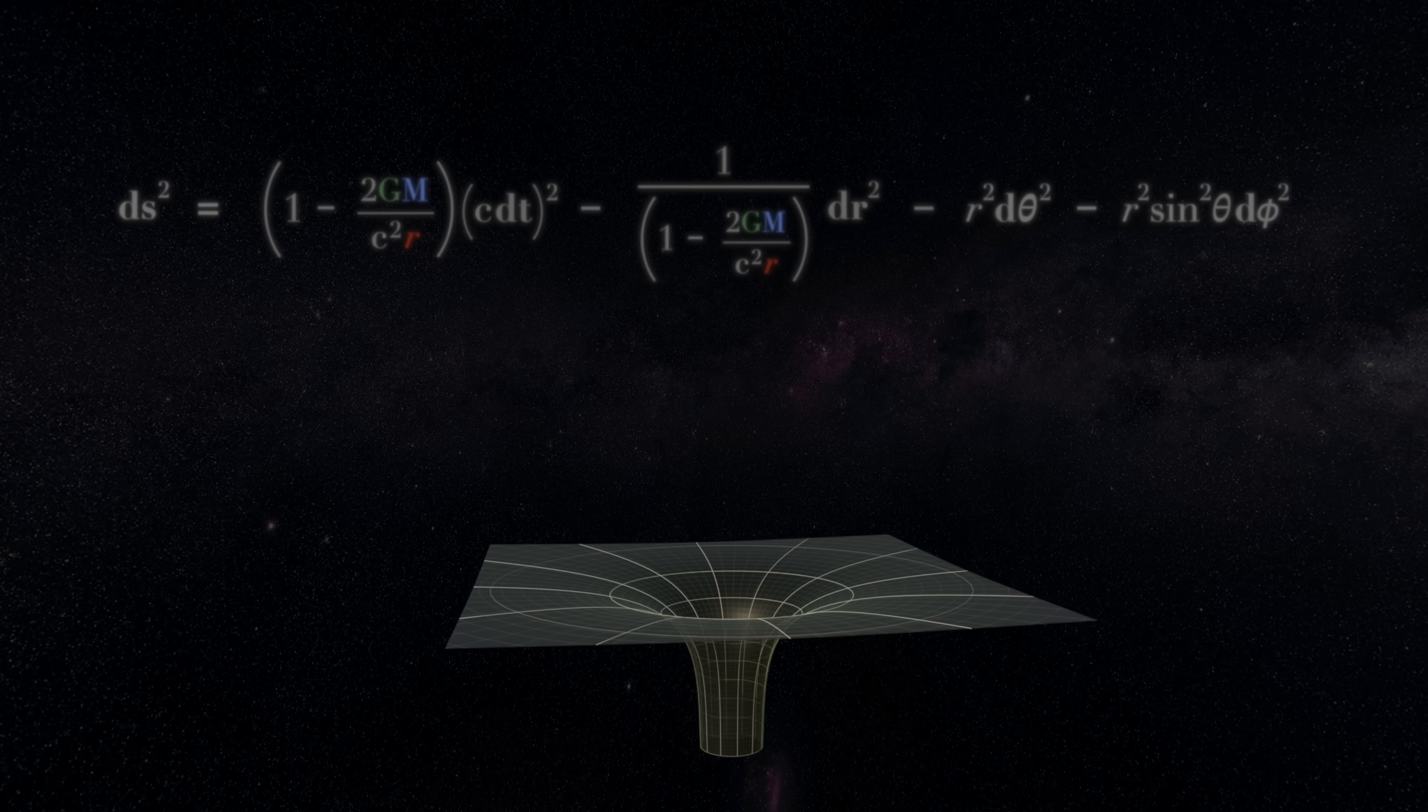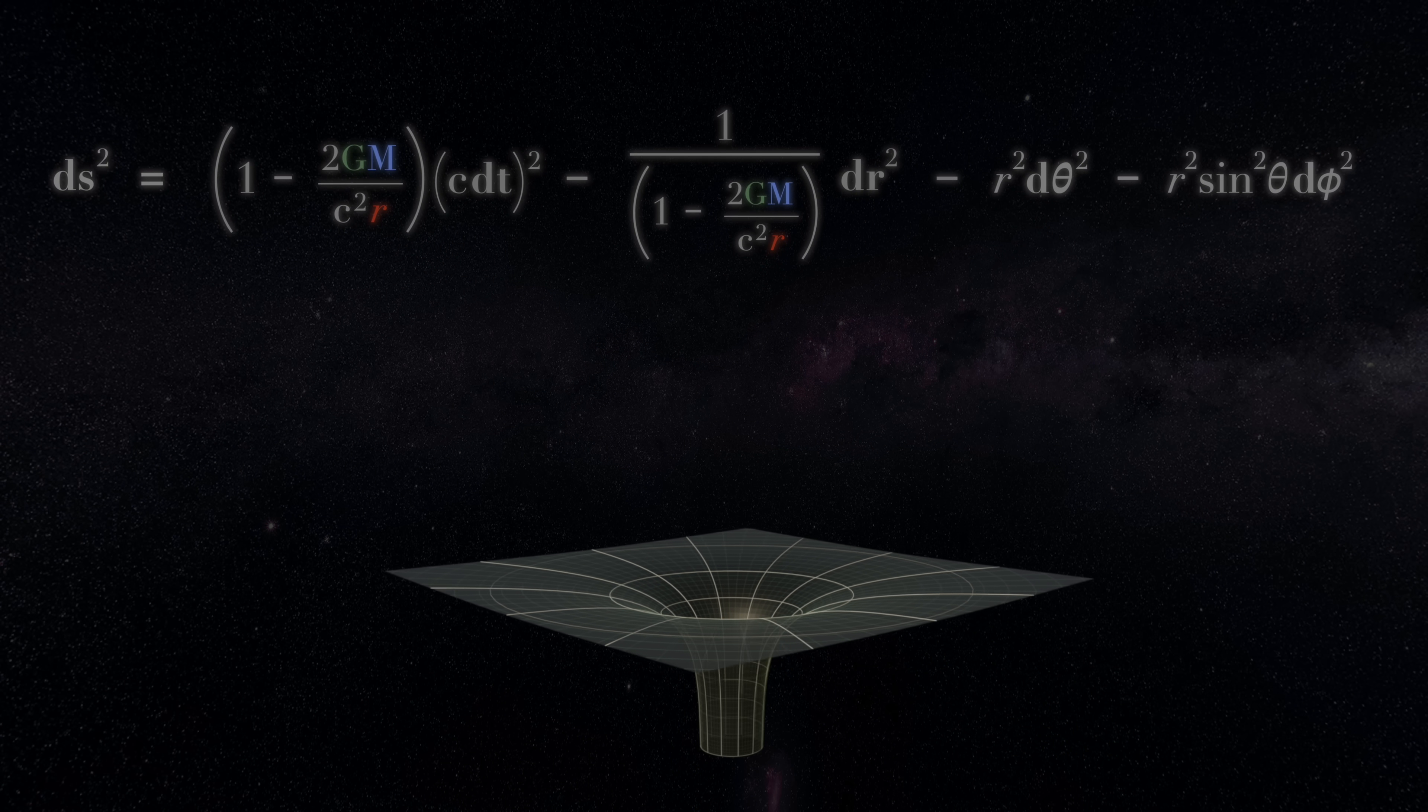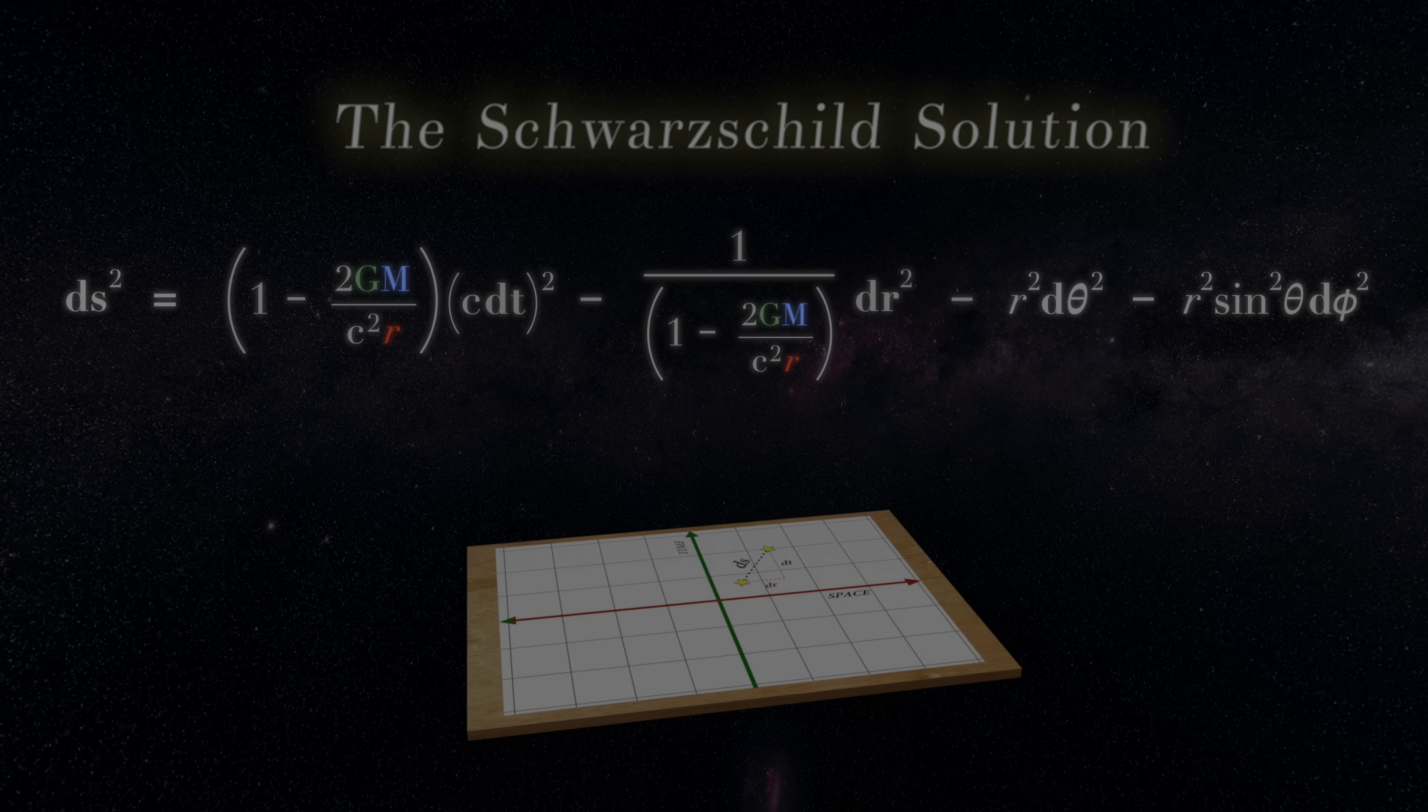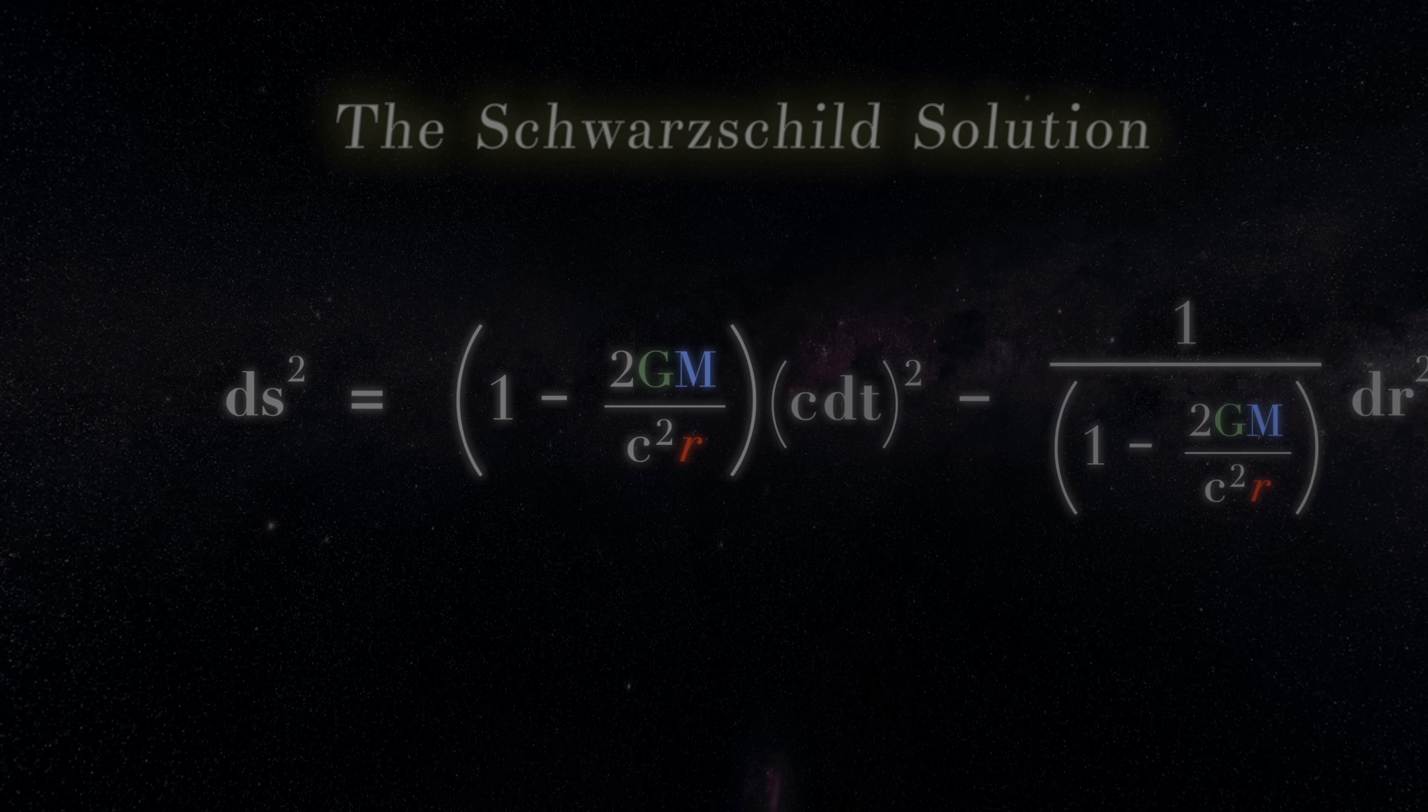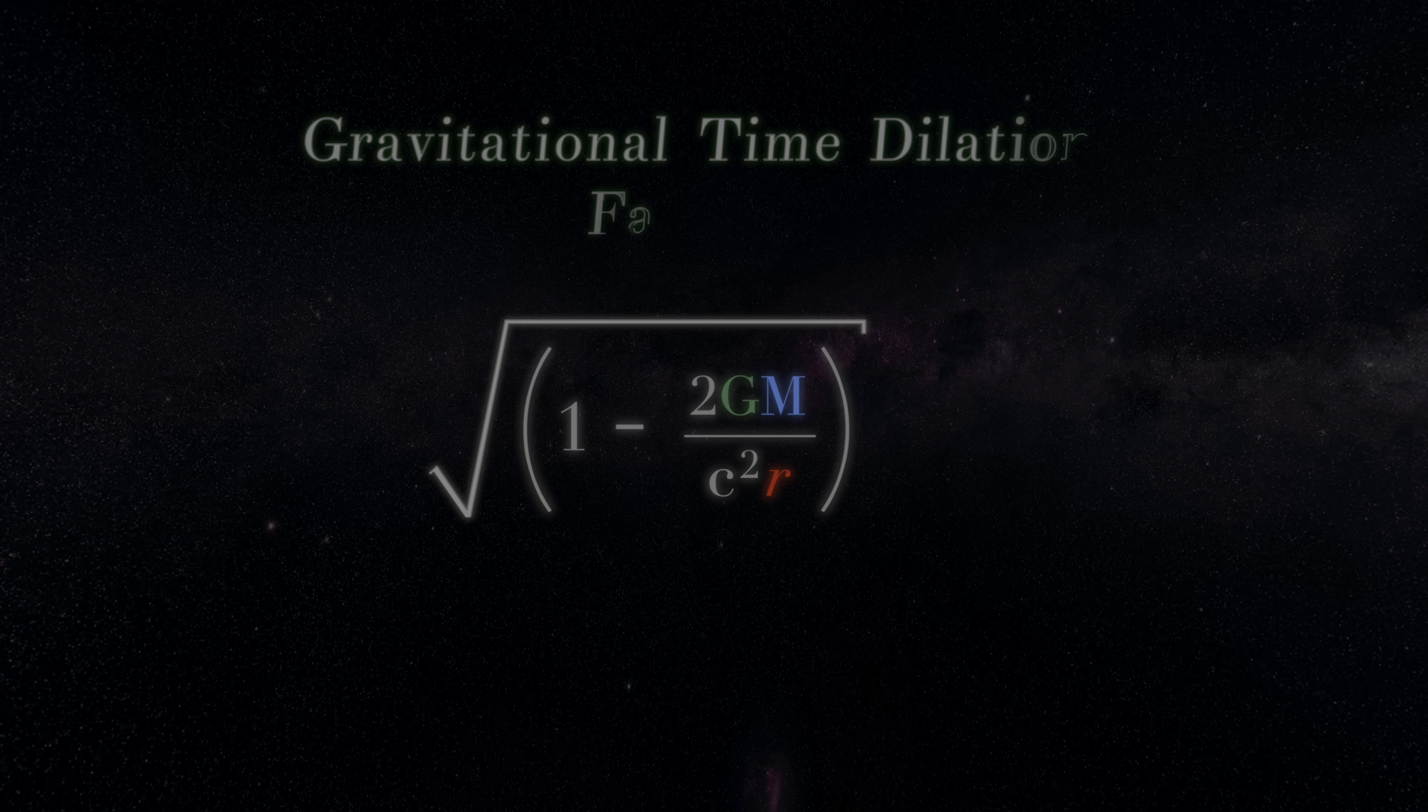If you're familiar with relativity, you may have come across this particular solution to the Einstein equation before, called the Schwarzschild solution. This expression, corresponding to the Schwarzschild spacetime metric, is pretty lengthy and intimidating. But for the moment, all we care about is this particular factor in front of the cdt-squared infinitesimal, which, when we take its square root, gives us the precise rate by which clocks in a gravitational field will tick more slowly.